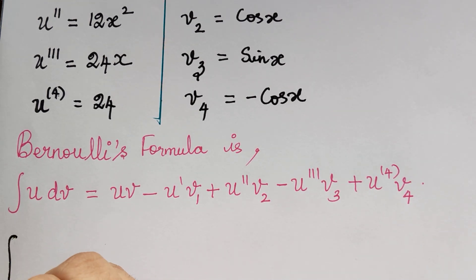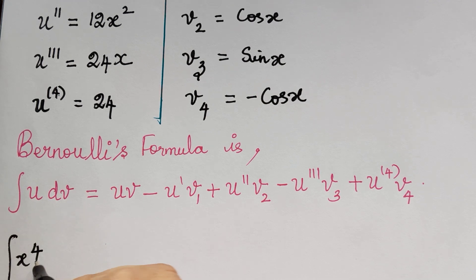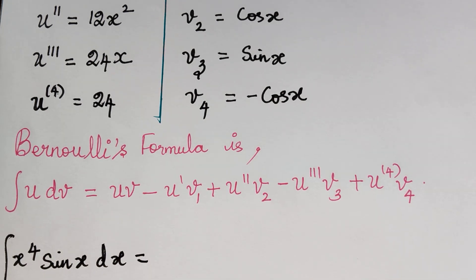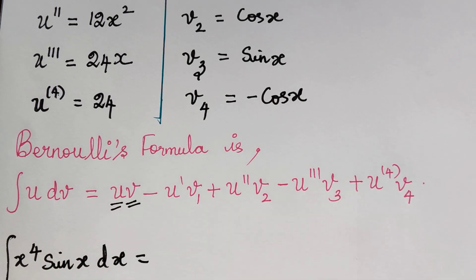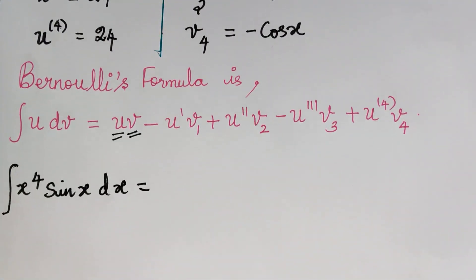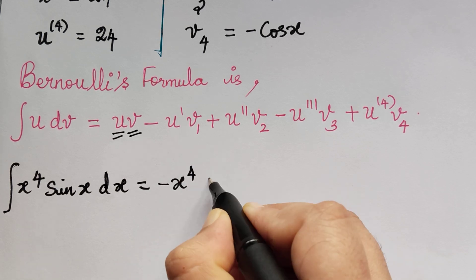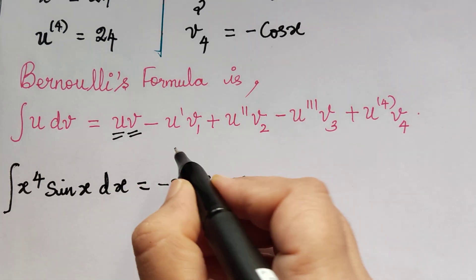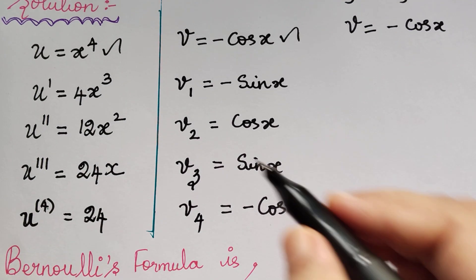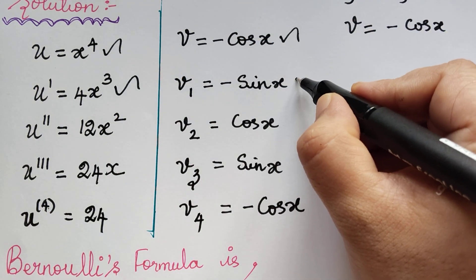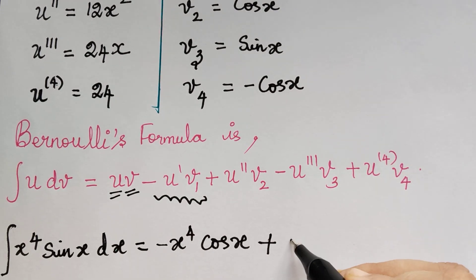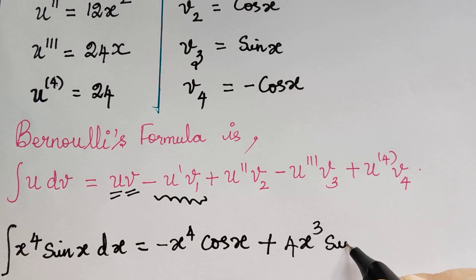So the integral of x to the power 4 sin x dx equals the following. First we multiply u and v: u is x⁴ and v is minus cos x, giving minus x⁴ cos x. Next we have minus u' times v1: u' is 4x³ multiplied with minus sin x. The two negatives make a positive, giving plus 4x³ sin x.